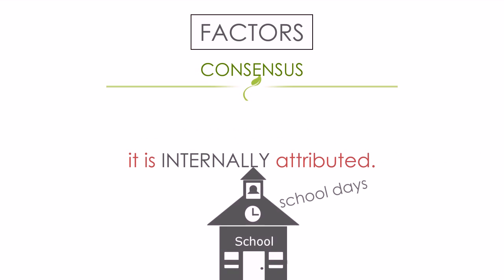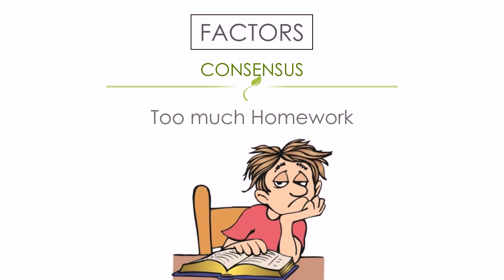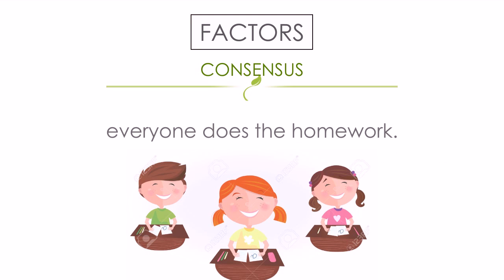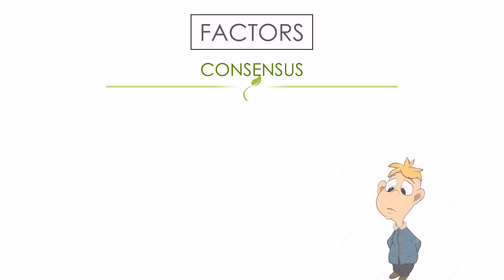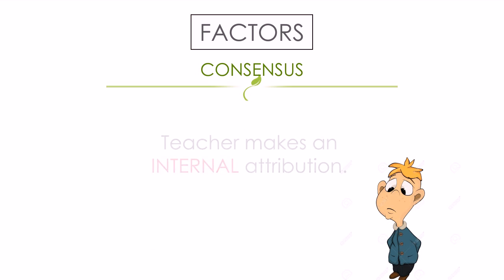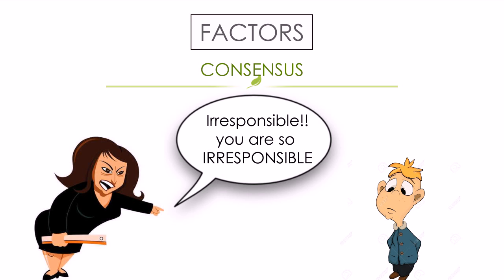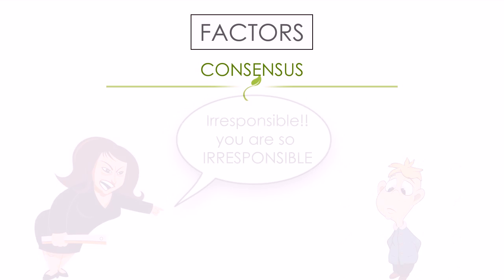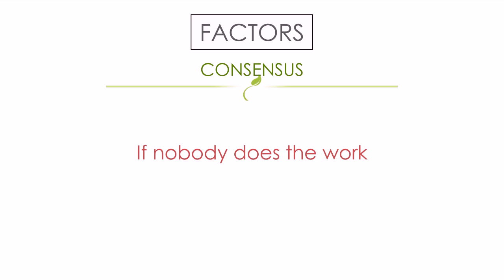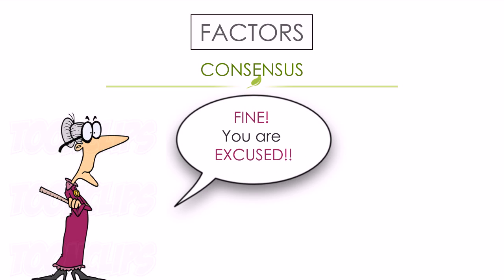In school, when time was short and homework was too much, if all your friends or classmates managed to get the work done and the next day you're the only one standing for not having done it, the teacher probably makes an internal attribution — you can hear her talk about how your friends could manage it and you couldn't because you're irresponsible. But if none of your classmates did the work, the teacher tends to make an external attribution and excuses all of you, granting you some more time.